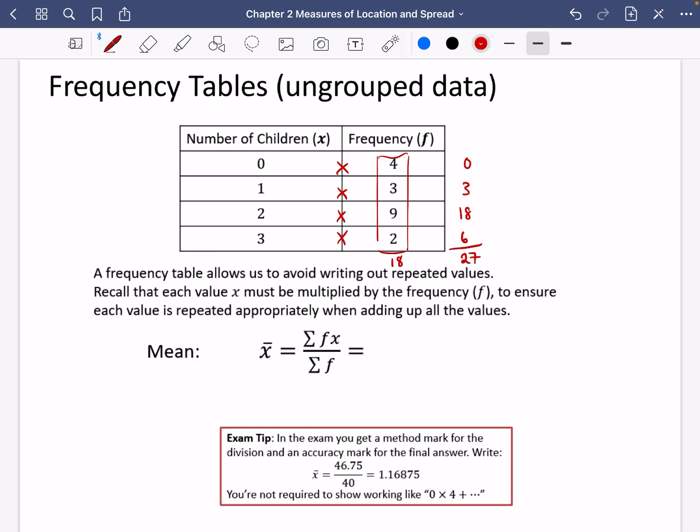So in this case, I have written it in this notation. I've said that it's the sum of fx. This means the sum of the frequencies multiplied by the x values. This is my fx column that I've got here. And so the sum of those is 27.